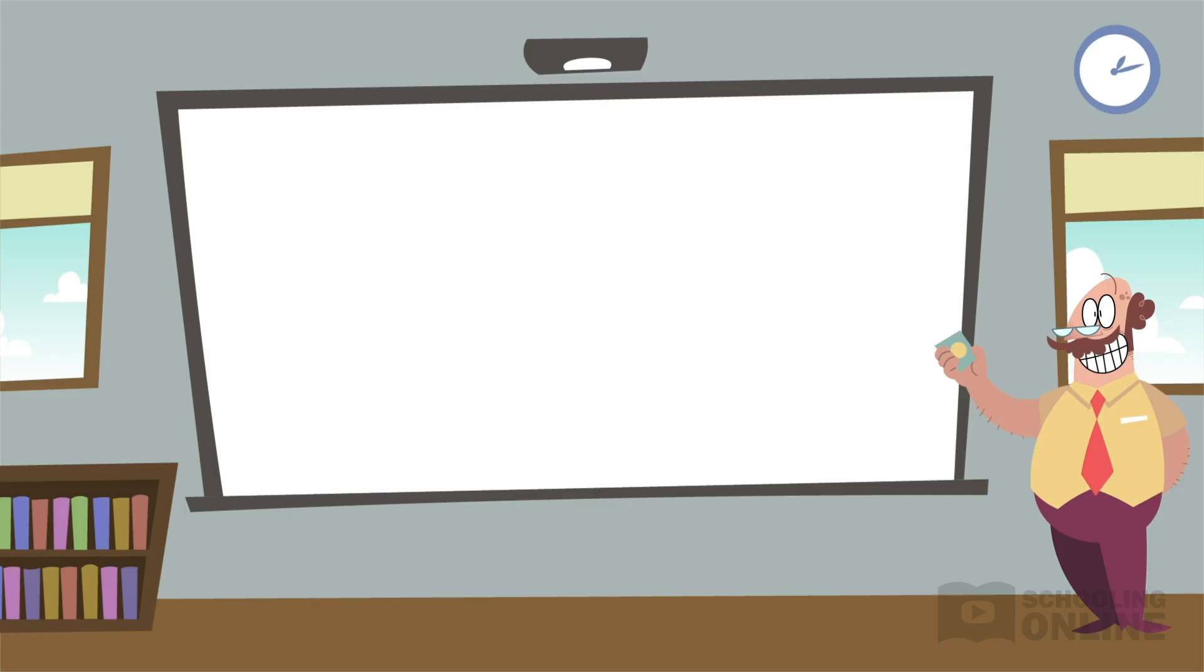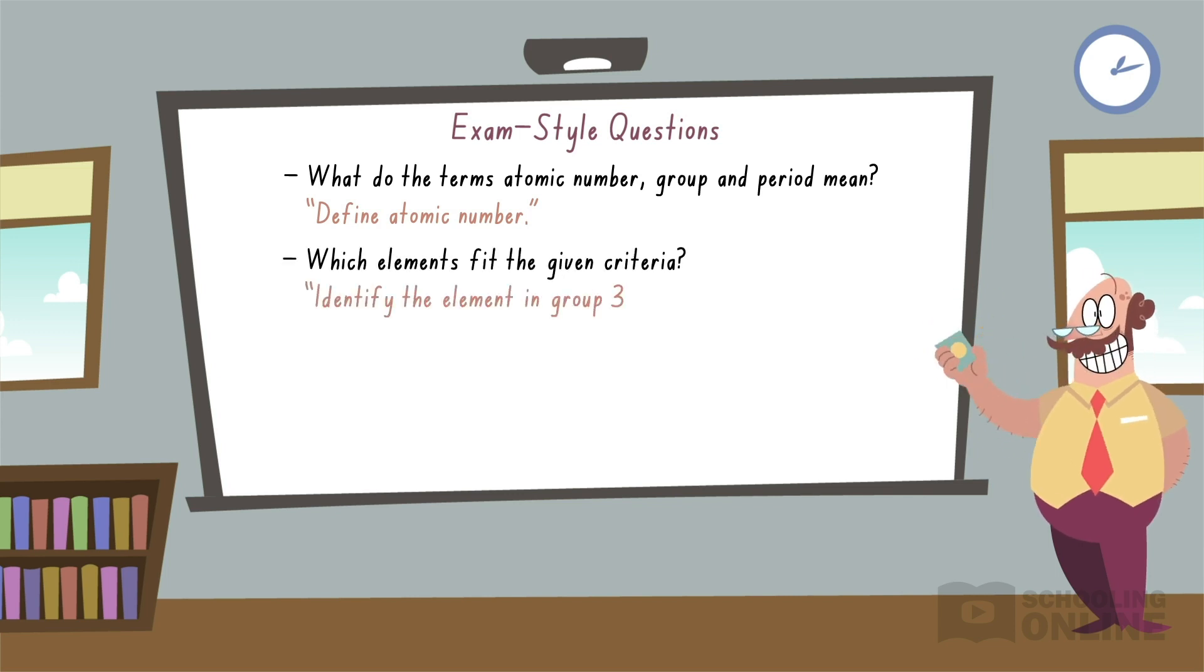Before we finish, let's consider the types of questions you might be asked in exams. Questions may include: What do the terms atomic number, group, and period mean? Which elements fit the given criteria? And how is the periodic table organised?